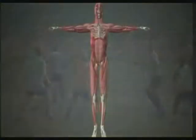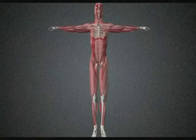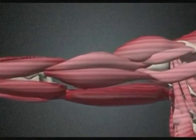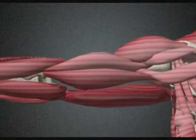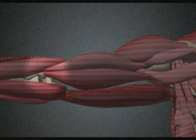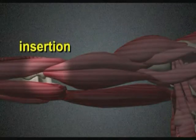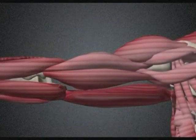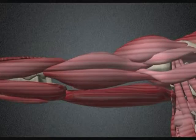For movement to occur, a muscle must cross a joint between two bones and be attached to both bones. The point at which the muscle is attached to the moving bone is called the insertion of the muscle, and the point at which the muscle is attached to the non-moving bone is known as the origin of the muscle.